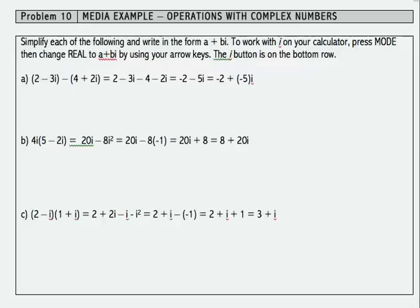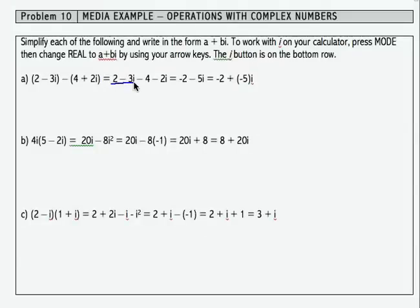Let's start with the first one: (2 - 3i) - (4 + 2i). To work this problem, I'm going to remove parentheses and combine like terms. 2 minus 3i, the parentheses comes off, no problem. The minus here needs to be distributed across each of the terms. That becomes minus 4 minus 2i.